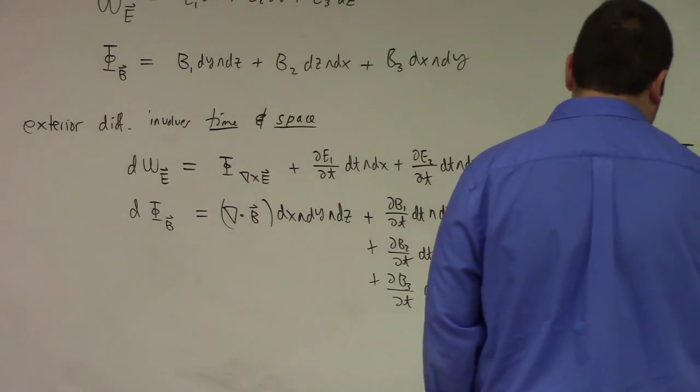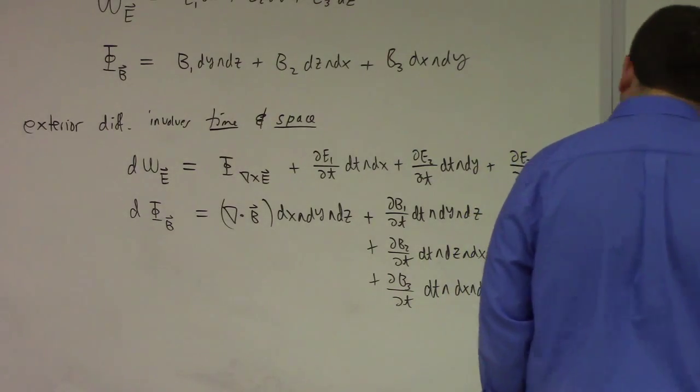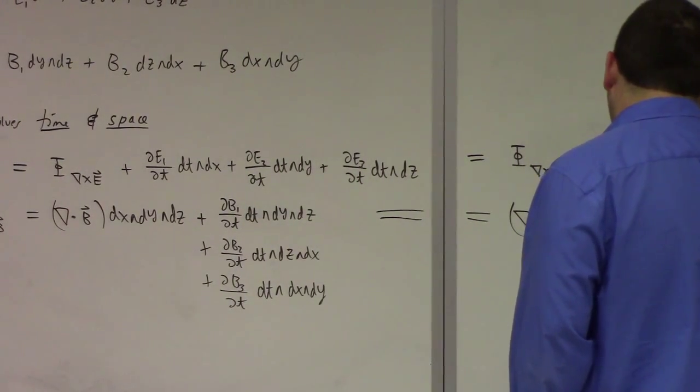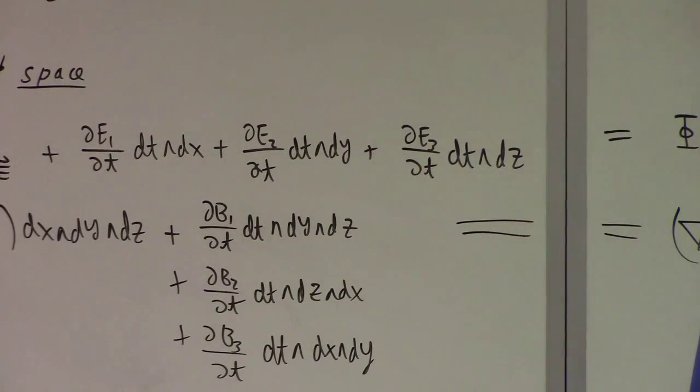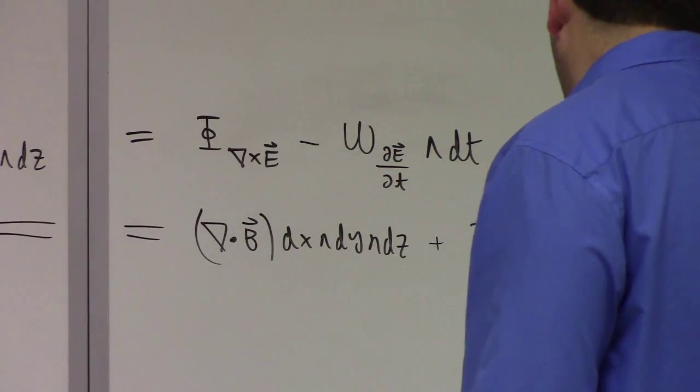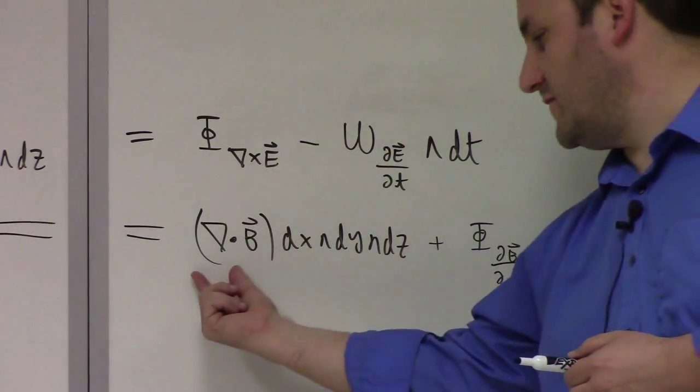Can we rewrite this in a nice way? Of course we've got the divergence times the volume form dx wedge dy wedge dz. Check that out. So then I've got plus the flux form of partial B partial t wedge dt. Why don't I have a minus this time? We have two transpositions, two wedge flippers. These are very beautiful formulas because they connect the curl in a time derivative; they connect the divergence in a time derivative. That's very pretty.